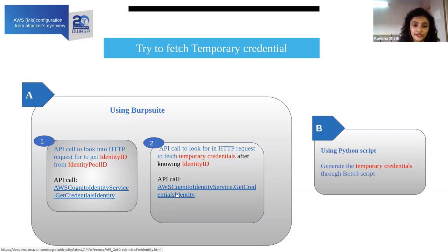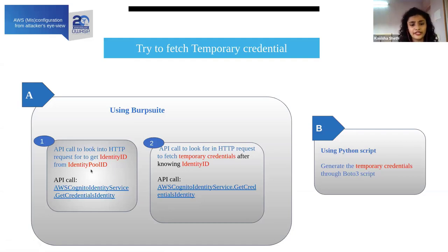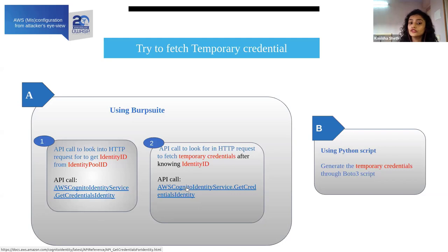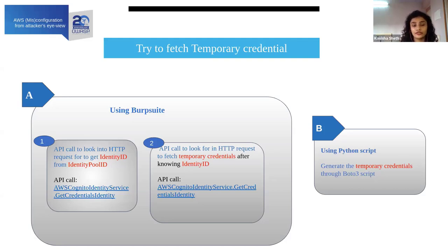While looking into the HTTP request, look for the specific API call when you try to get the identity ID. This is the API call made when you try to get a temporary credential from the identity ID. This is the standard approach to get temporary credentials just by knowing the identity pool ID — if the application or environment has not properly configured Cognito and is allowing unauthenticated users.